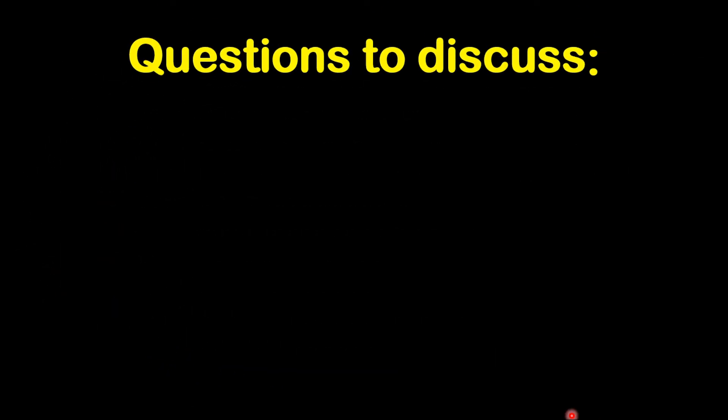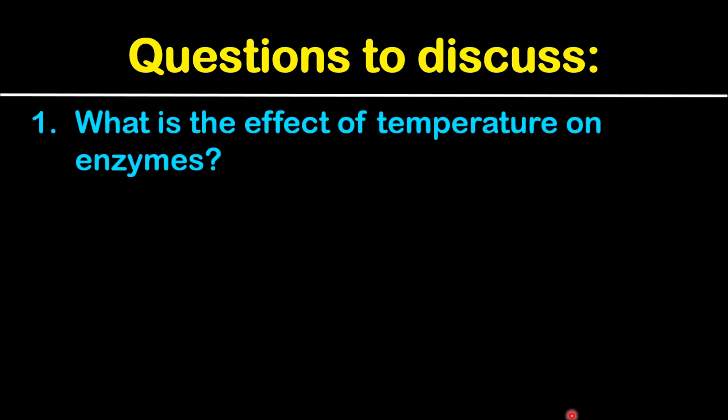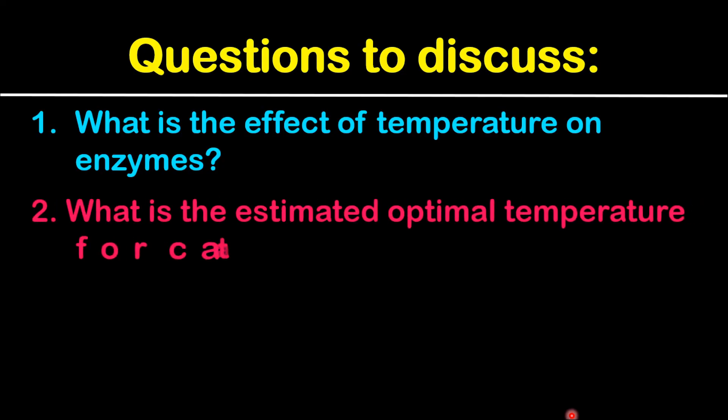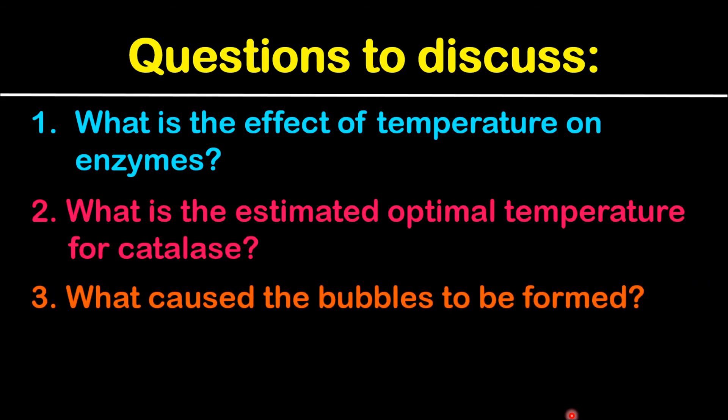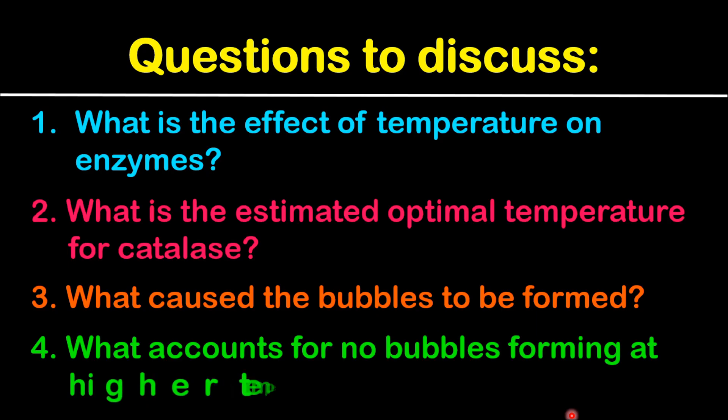Now some questions for discussion: We can look at what is the effect of temperature on enzymes. It is also good to discuss what is the estimated optimal temperature for catalase. We can also discuss what caused the bubbles to be formed, and also what accounts for no bubbles forming at higher temperatures.